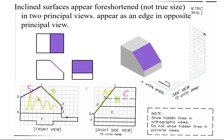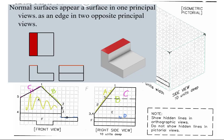For the rest of the surfaces, since they are normal surfaces, we will be able to locate the true size surface or the surface edges in the given two views. Mark out the surfaces and the surface edges as letters in the two given views.